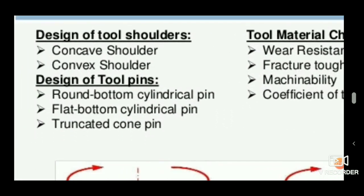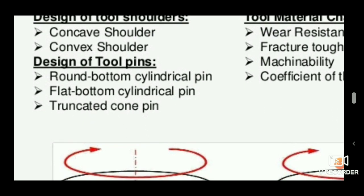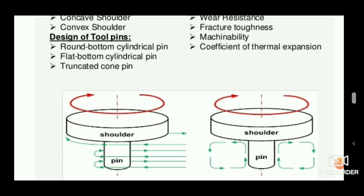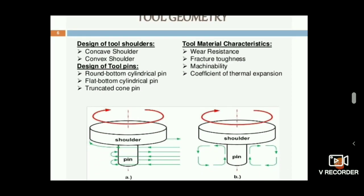This shows the geometry design of the tool shoulders. The two types of shoulders available are concave and convex; concave shoulders are mostly preferred. For pin design, types include a round bottom pin, a flat bottom cylindrical pin, and a truncated cone pin, selected based on the required application.